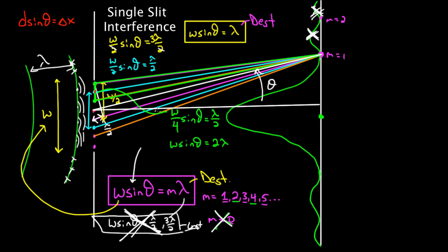I got to be honest with you, single-slit interference is confusing. In fact, this argument I gave earlier — first time I heard about this, I thought this was just mathematical mumbo-jumbo. I was like, what are you talking about? This makes no sense. It seems like you could argue anything like this, but you can't. I'm going to try to show you that in this video.